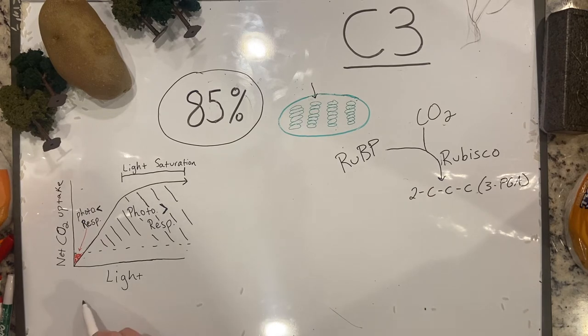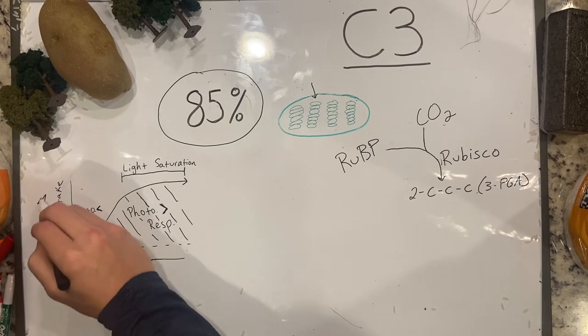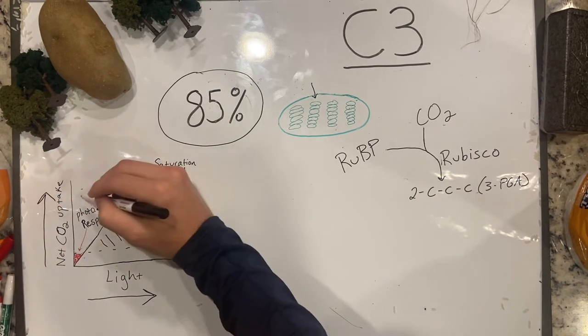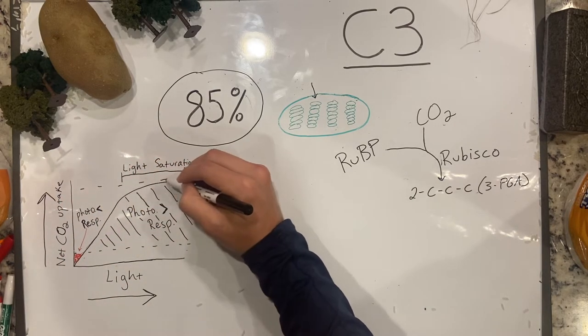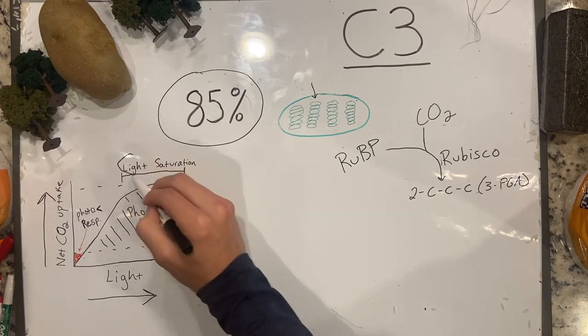As the intensity of light increases, the photosynthetic CO2 uptake rate also increases. However, the rate plateaus at high light intensity. This point is called light saturation.